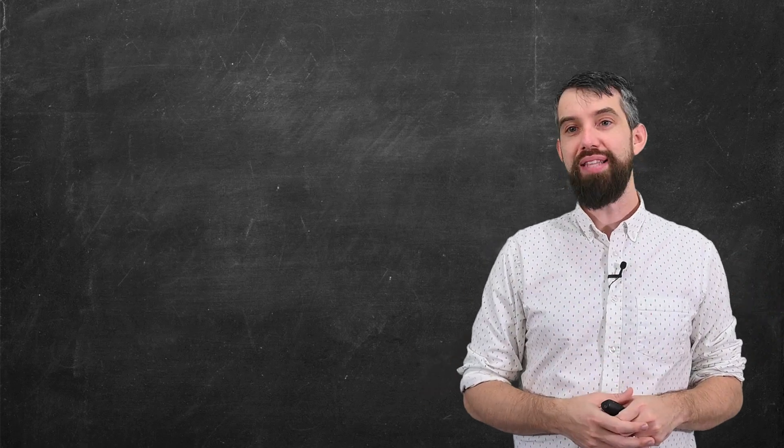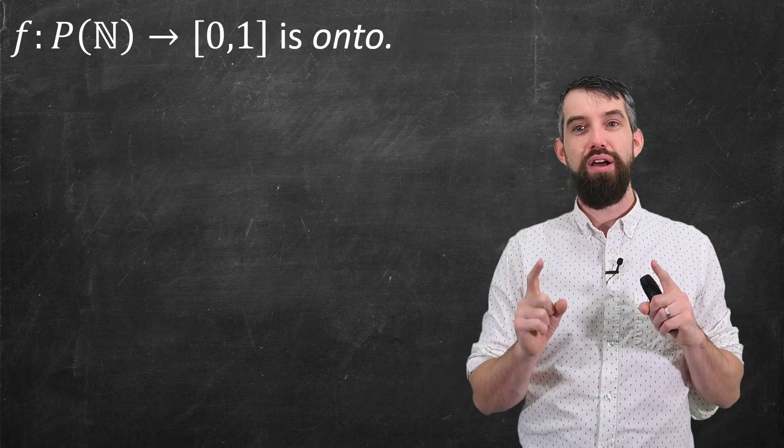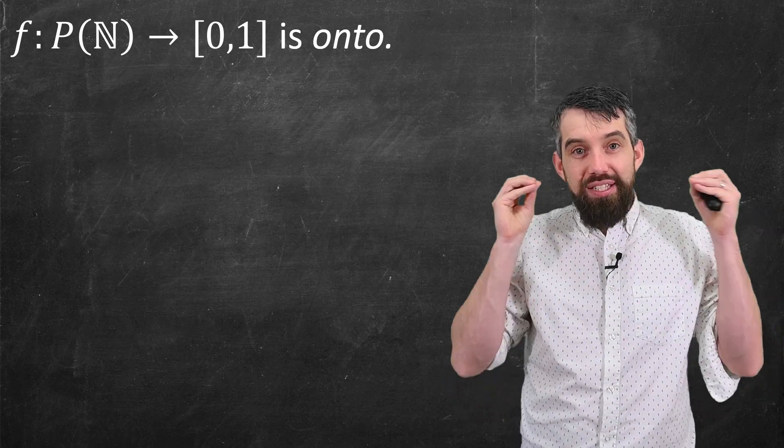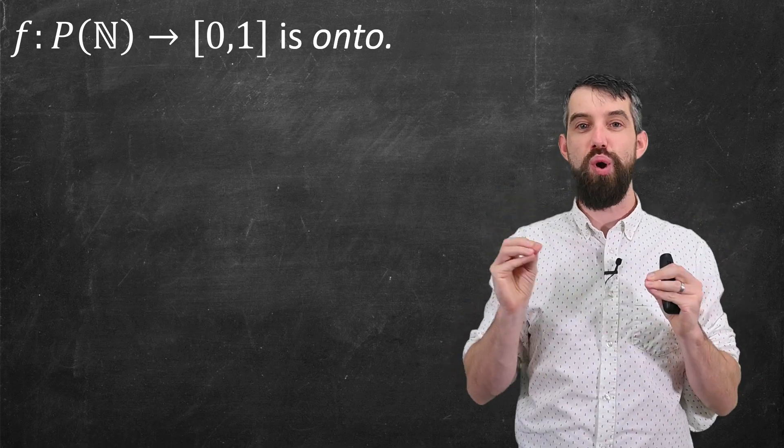In other words, what I've said is that I have a function now from power set of the natural numbers, these subsets of the natural numbers, to the continuous interval [0, 1].